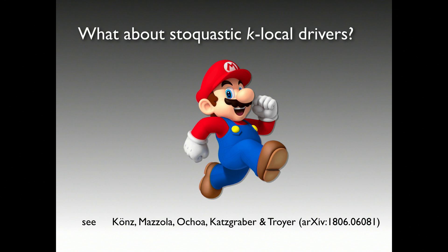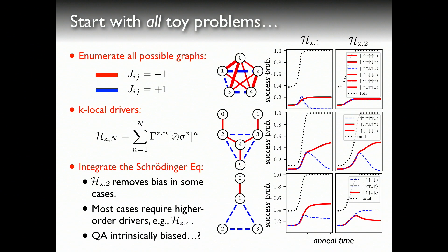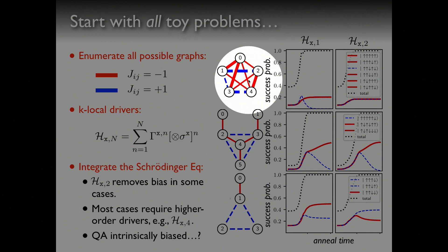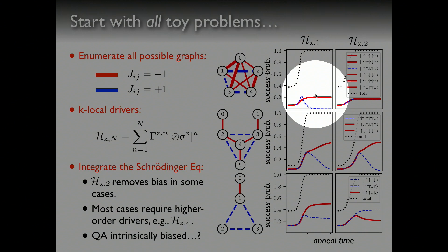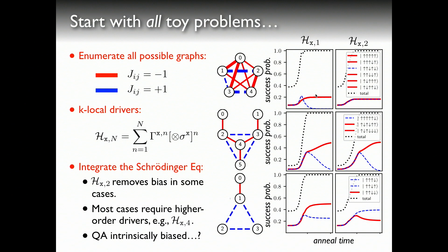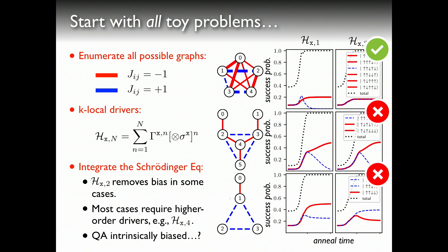The next logical question — which is what Mario talked about — is what happens if we use stochastic k-local drivers? He did wonderful work enumerating all possible configurations. In this toy example, if you use a transverse field driver hx1, you find five states with probability of 20 percent and one state that is suppressed. If you introduce a two-local driver, you find all states with probability of one sixth. But if you look at the two other examples, using two-local drivers means sampling will never be fair.